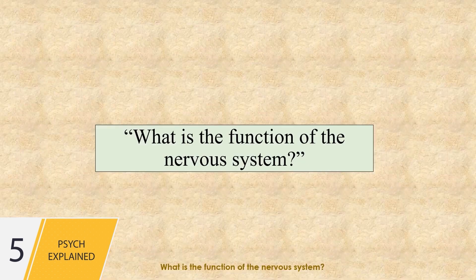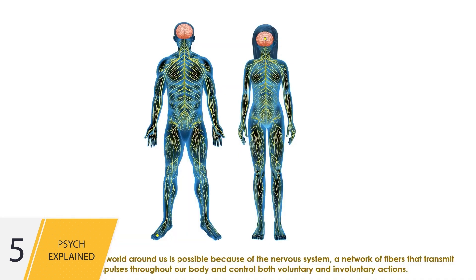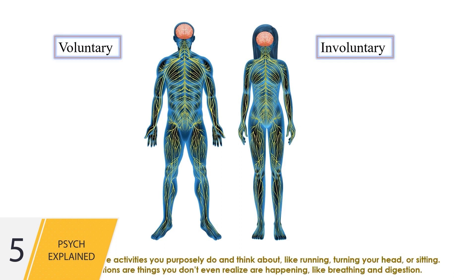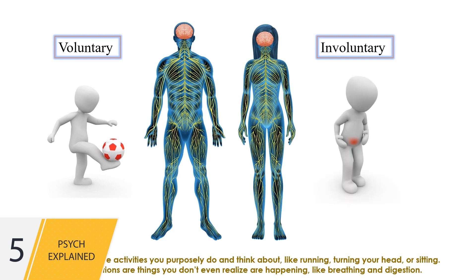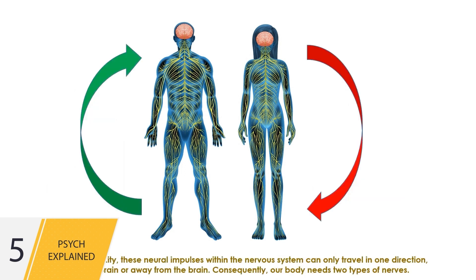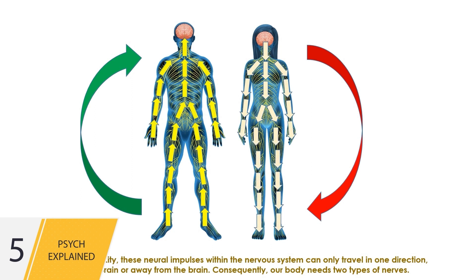What is the function of the nervous system? Our awareness of the world around us is possible because of the nervous system — a network of fibers that transmit neural impulses throughout our body and control both voluntary and involuntary actions. Voluntary actions are activities you purposely do and think about, like running, turning your head, or sitting. Involuntary actions are things you don't even realize are happening, like breathing and digestion. Despite its complexity, neural impulses within the nervous system can only travel in one direction — either to the brain or away from the brain.